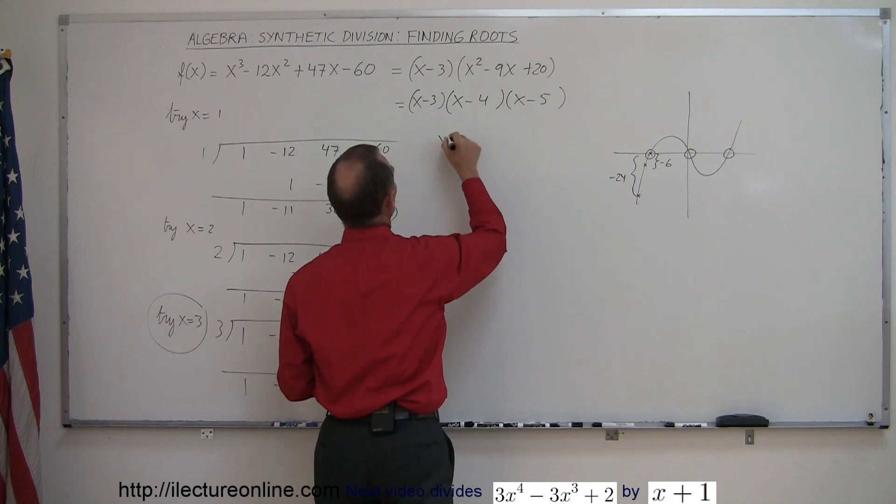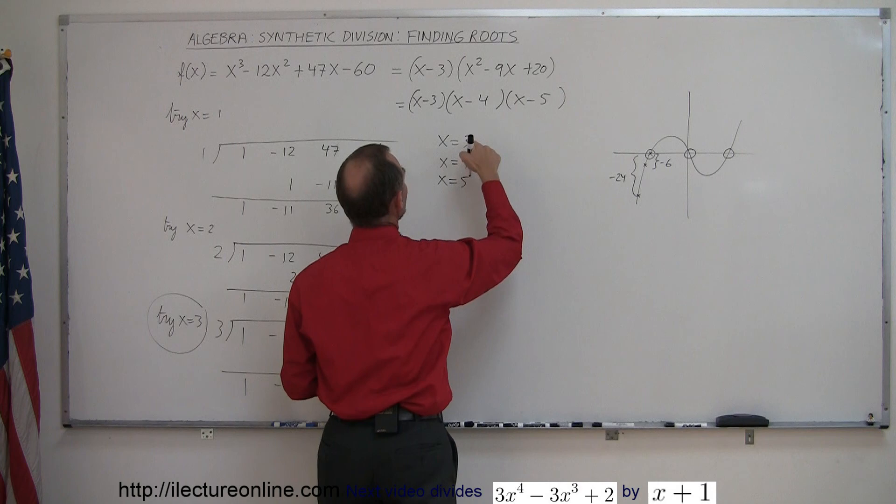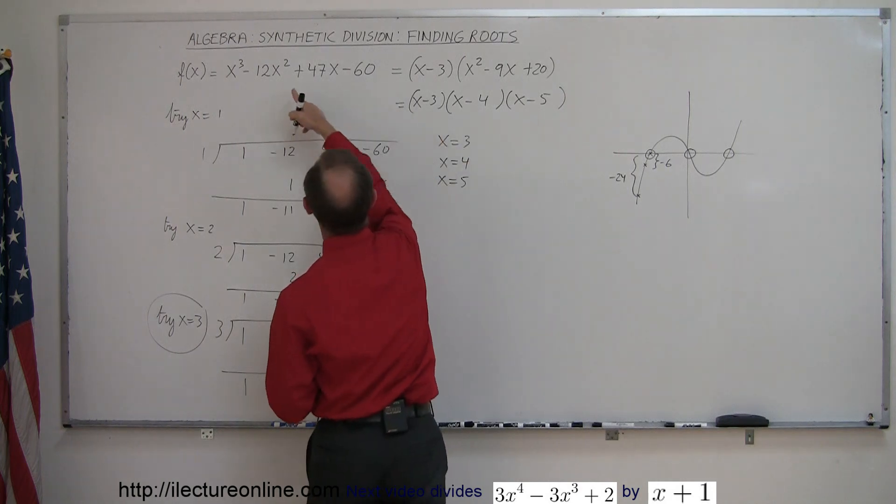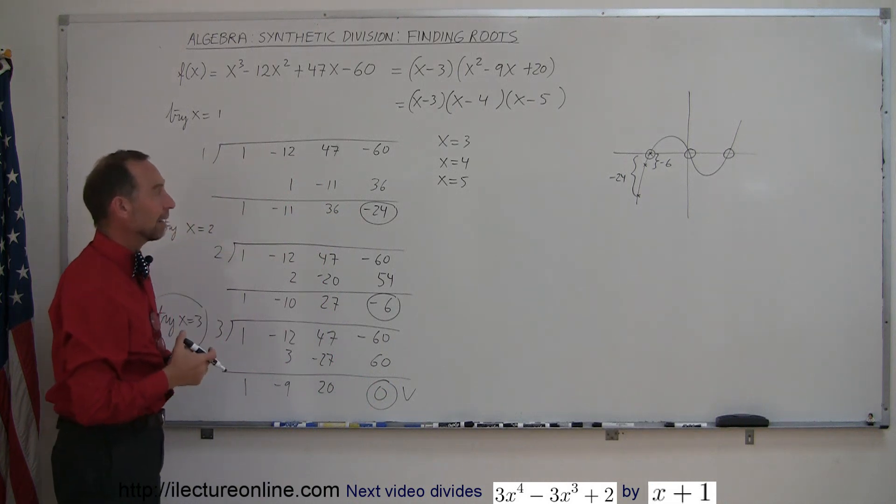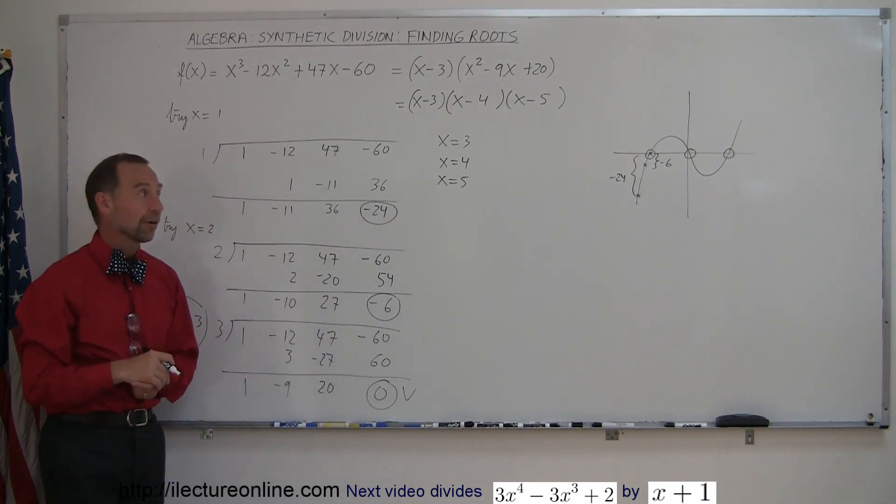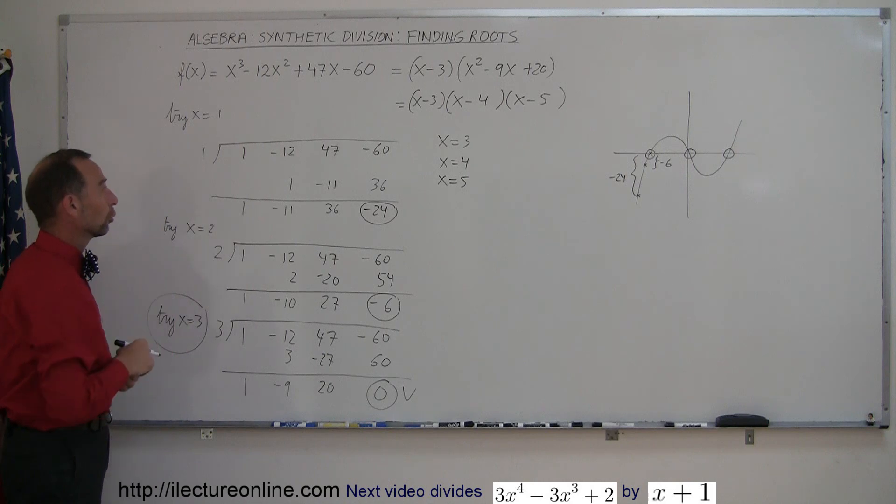Which means the three roots are x equals 3, x equals 4, and x equals 5. So if I plug in either 3 or 4 or 5 into my function here, I will get 0 for y each time, indicating I have found the roots. And that's how you use synthetic division to find roots of a polynomial to the third order.